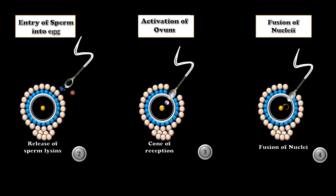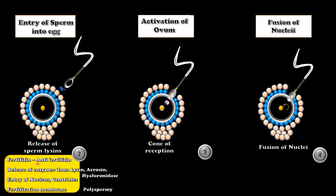The second step is the entry of sperm into the ovum. Once the sperm comes in close contact with the ovum, the sperm produces a chemical called anti-fertilizin, which combines with fertilizin of the ovum. This reaction is species-specific and it prevents cross-fertilization. When the sperm comes in contact with the corona radiata, the acrosome covering breaks to release acrosomal enzymes: acrosin, zonalycine, and hyaluronidase.